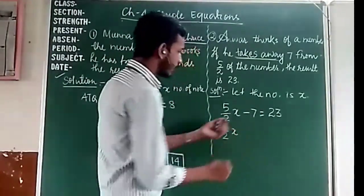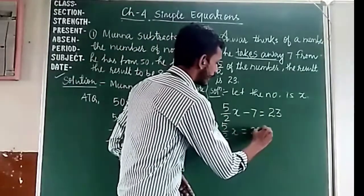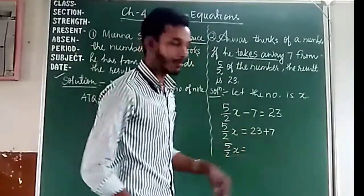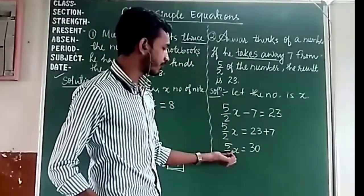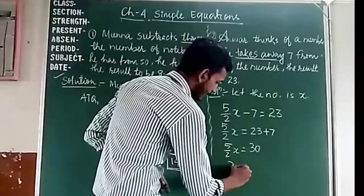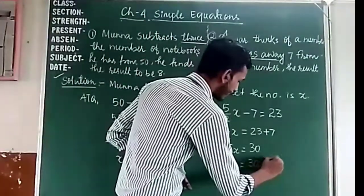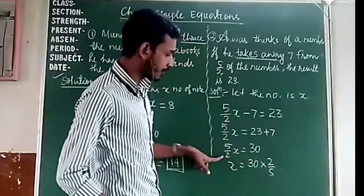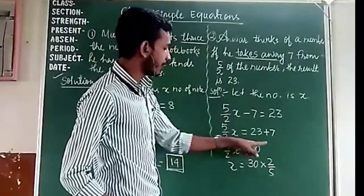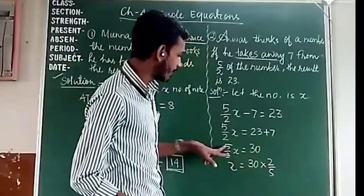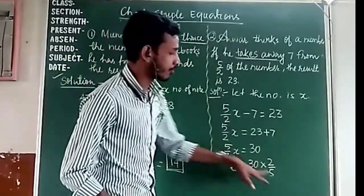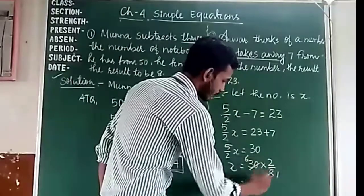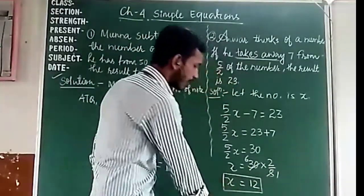Transposing -7 to the right-hand side: 5/2·x equals 23 plus 7, which is 30. Now we transfer 5 by 2 to the right-hand side — on the other side it becomes multiplication by 2 by 5. So x equals 30 times 2 by 5. Simplifying: 5 cancels, giving x equals 12. That number is 12.